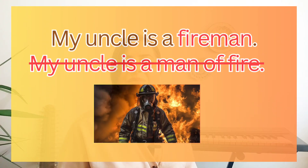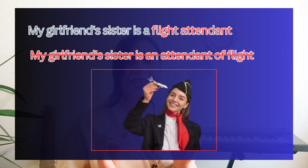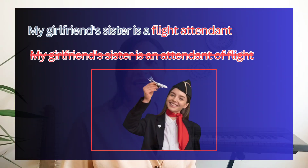Lastly, compound nouns are used to describe different occupations, both as open or closed compound nouns. We cannot use 'of' to refer to a job. For example, we say 'my uncle is a fireman' instead of 'my uncle is a man of fire.' Similarly, we say 'my girlfriend's sister is a flight attendant' rather than 'my girlfriend's sister is an attendant of flight.'